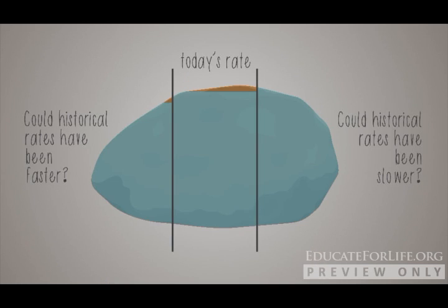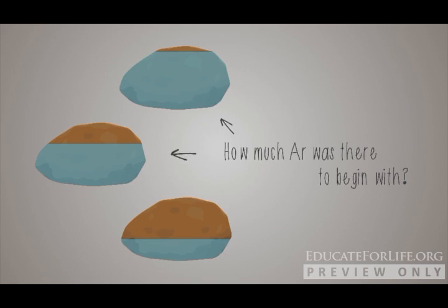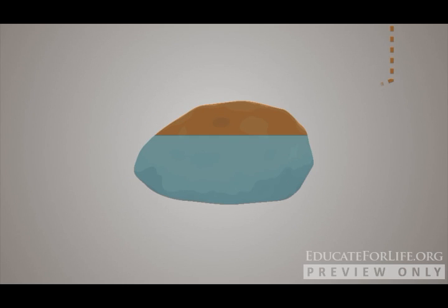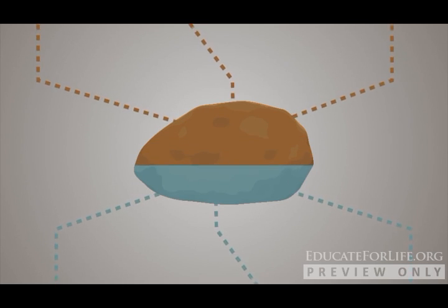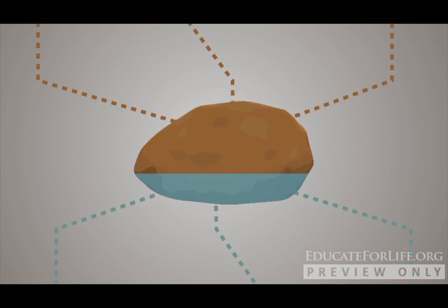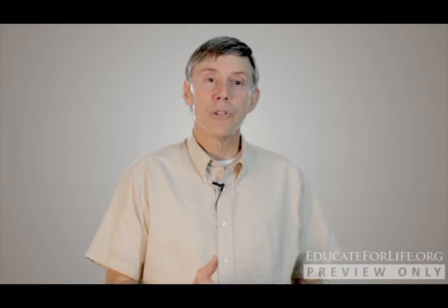However, you have to assume some things. Number one: how do you know the rate of decay has always been constant? You don't know that — you have to assume it. Number two: how do you know there was zero argon at the beginning of this decay process when the rock first solidified? You don't know that — you have to assume it. Number three: how do you know that no argon or potassium is leached in or out of the system? These are all mobile species. You don't know that. You have to assume, assume, assume. The numbers you get are only as good as those assumptions are true.